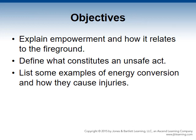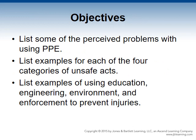Our objectives: Explain empowerment and how it relates to the fire ground. Define what constitutes an unsafe act. List some examples of energy conversion and how they can cause injuries. List some of the perceived problems with using PPE. List examples for each of the four categories of unsafe acts. List examples of using education, engineering, environment, and enforcement to prevent injuries.